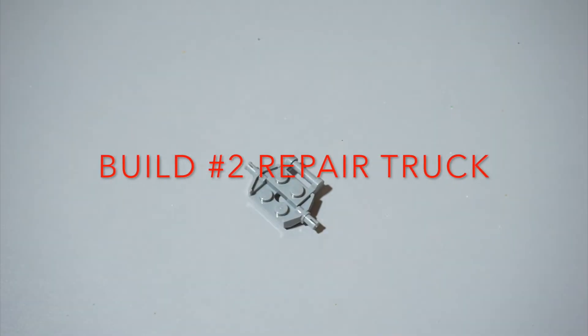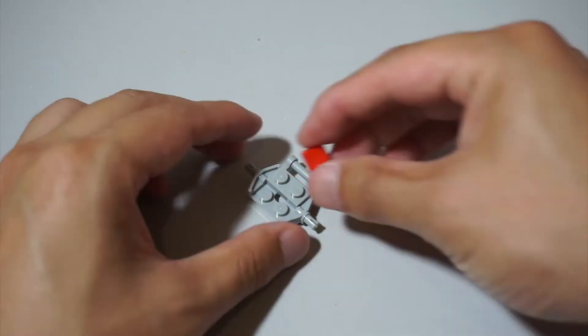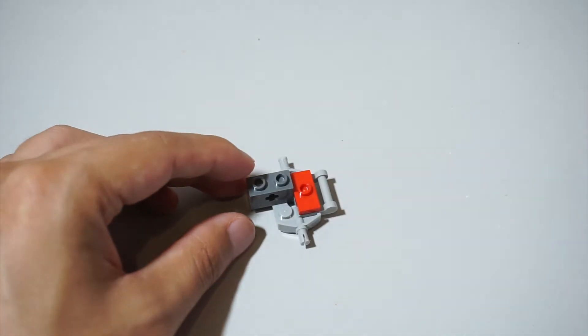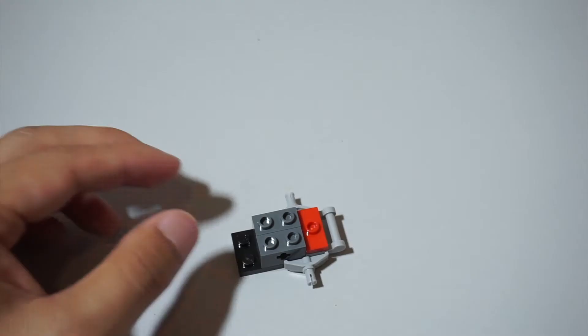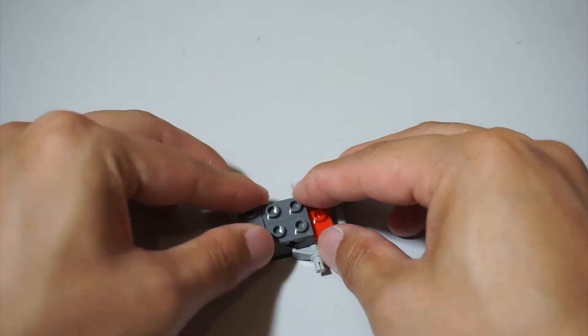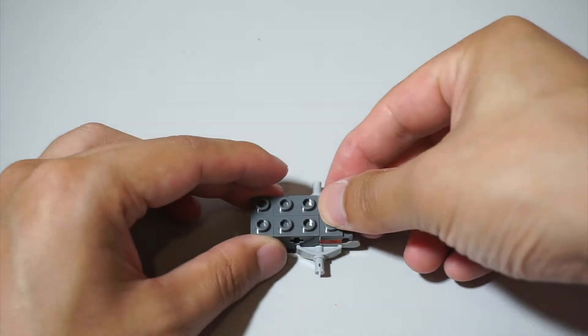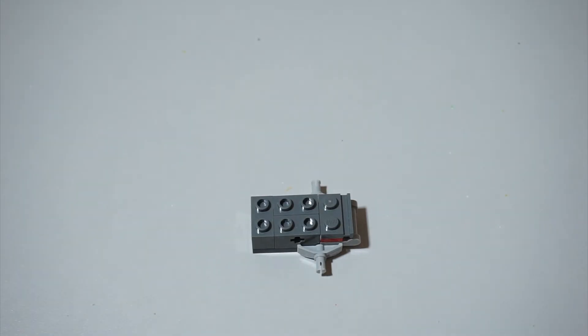This is build 2, the repair truck. This is a great build and even though all three builds are vehicles, this is really different to the race car which is nice to see. As for the first build, we start off with the back of the truck.